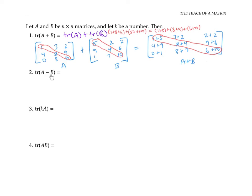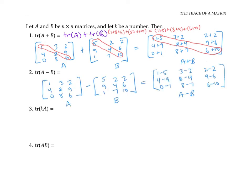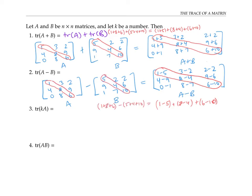Similarly, when we subtract two matrices, we subtract corresponding entries. So the trace of A minus B, which is the sum of A's diagonal entries minus B's diagonal entries, equals the trace of A minus the trace of B.